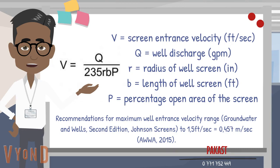The screen entrance velocity formula uses the following variables: Q — well discharge; R — radius of well screen; B — length of well screen; P — percentage open area of the screen.